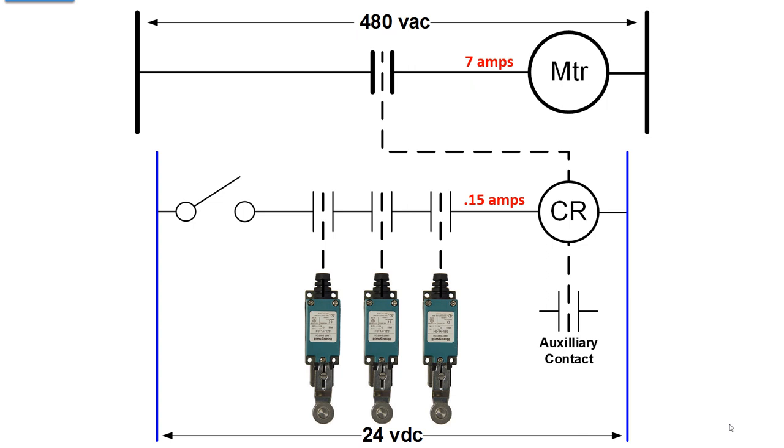The logic here is if all three limit switches are tripped, and you have the switch on, then you energize CR that closes the big heavy-duty contact and turns on the motor. Where do we find these circuits?